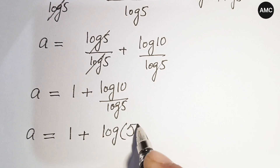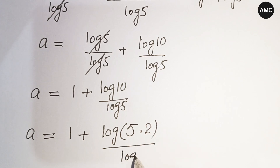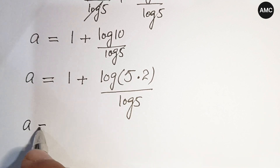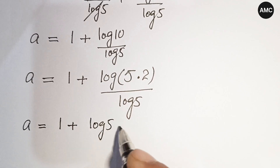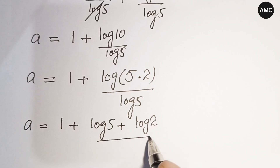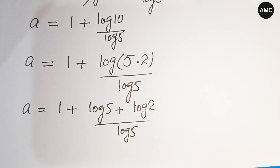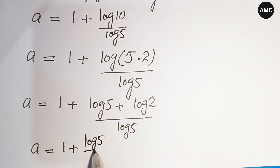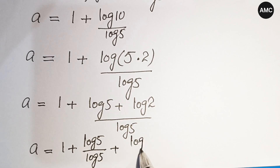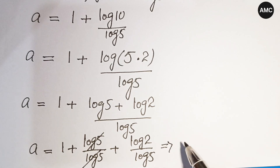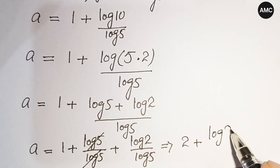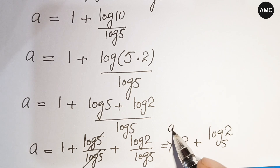Our next step: log 10 can be written as log of 5 times 2, since 5 times 2 equals 10. Applying the product law again, log(5 times 2) equals log 5 plus log 2. So a equals 1 plus (log 5 plus log 2) over log 5. Writing the denominator separately under each term, log 5 over log 5 cancels to 1, giving us a equals 1 plus 1 plus log 2 over log 5, which is a equals 2 plus log 2 to base 5.